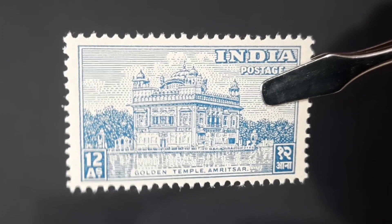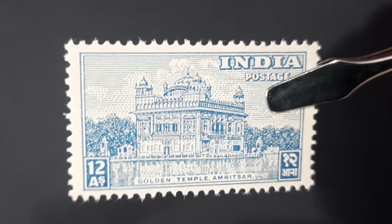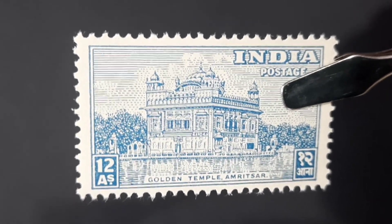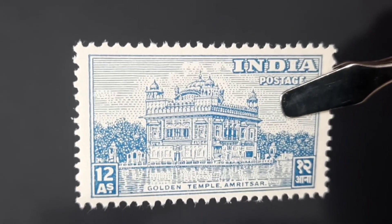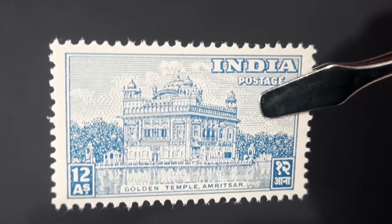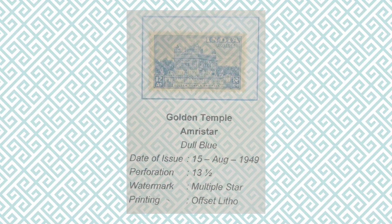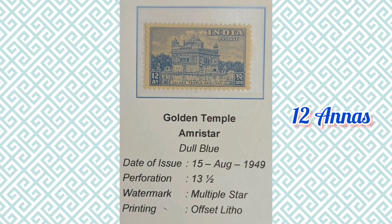The next stamp is the ten annas stamp. The image depicted here is the Harmandir Sahib, popularly known as the Golden Temple, the famous Gurudwara at Amritsar. The philatelic information of this stamp can be found here.